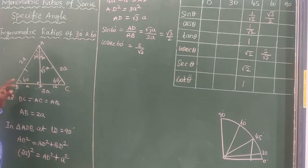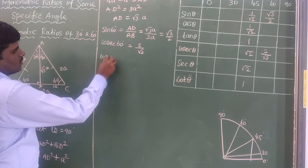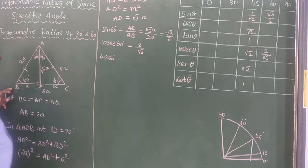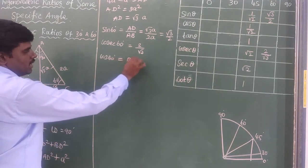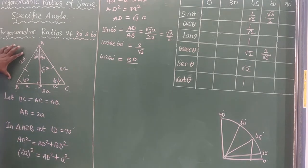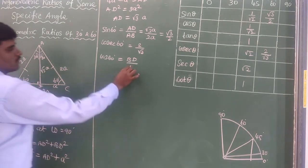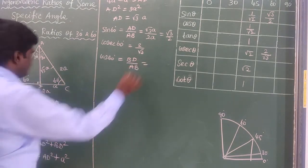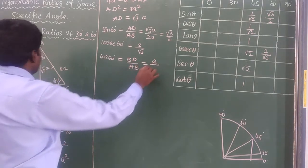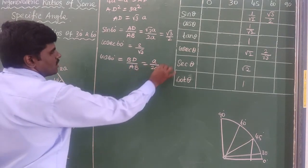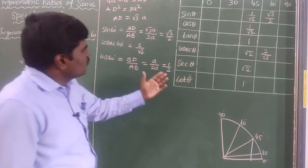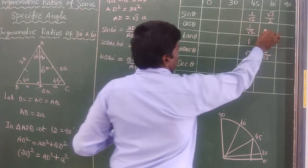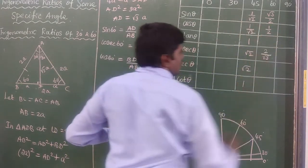Next, cos 60° means adjacent side divided by hypotenuse. The adjacent side is BD and the hypotenuse is AB. So cos 60° = BD / AB = A / 2A = 1/2. Therefore cos 60° = 1/2.